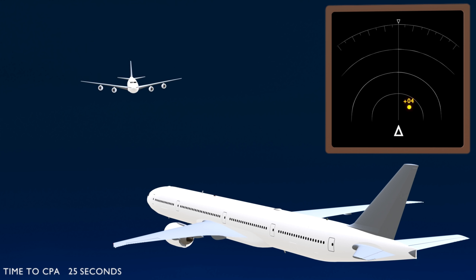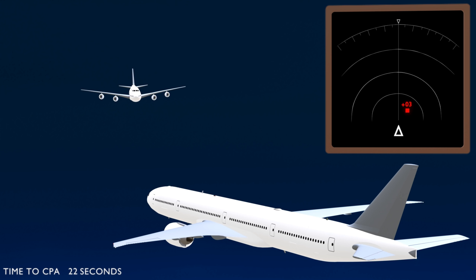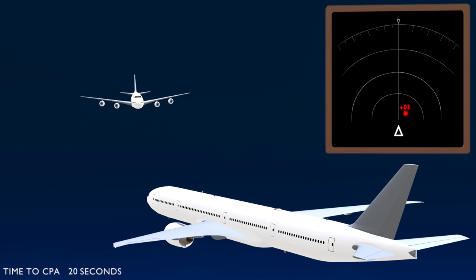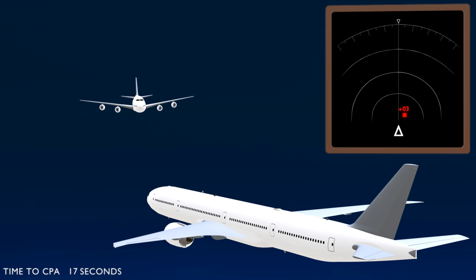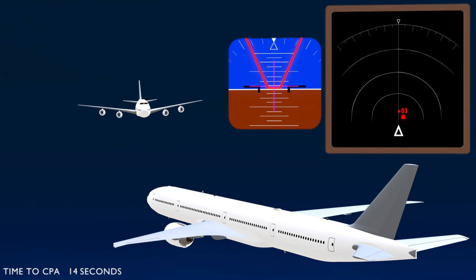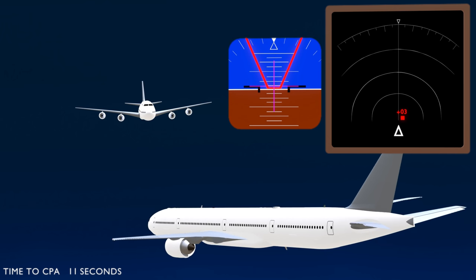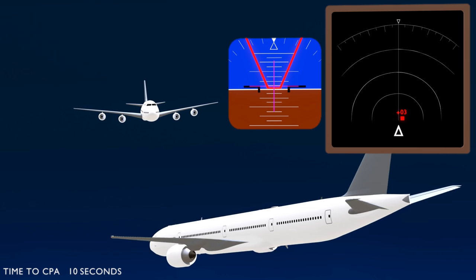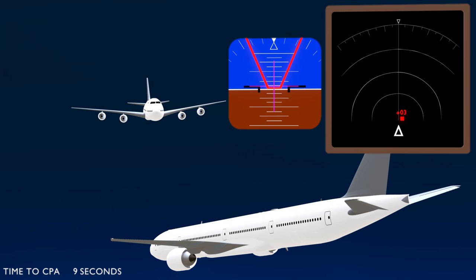With 25 seconds to go, the TCAS warning changes to a resolution advisory. The amber indications turn red, and an instruction is given in the cockpit to maneuver the aircraft: 'Descent. Descent.' Red lines on the flight display indicate the areas to avoid flying in.